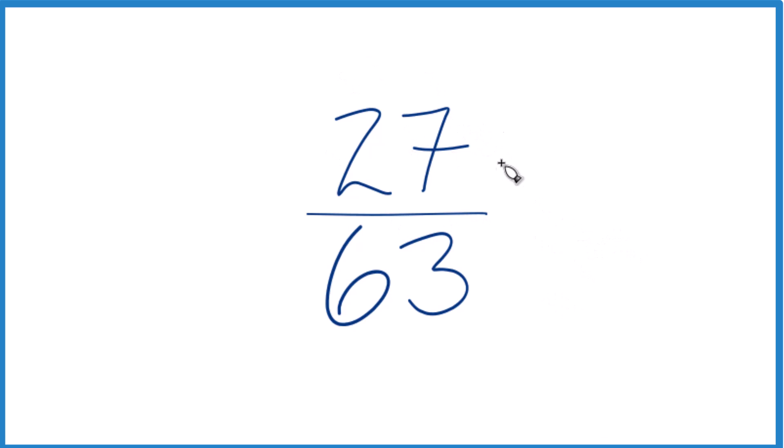We look at the factors for 27 and 63. So for 27, you have 1 times 27 and then 3 times 9. Those are the factors for 27.